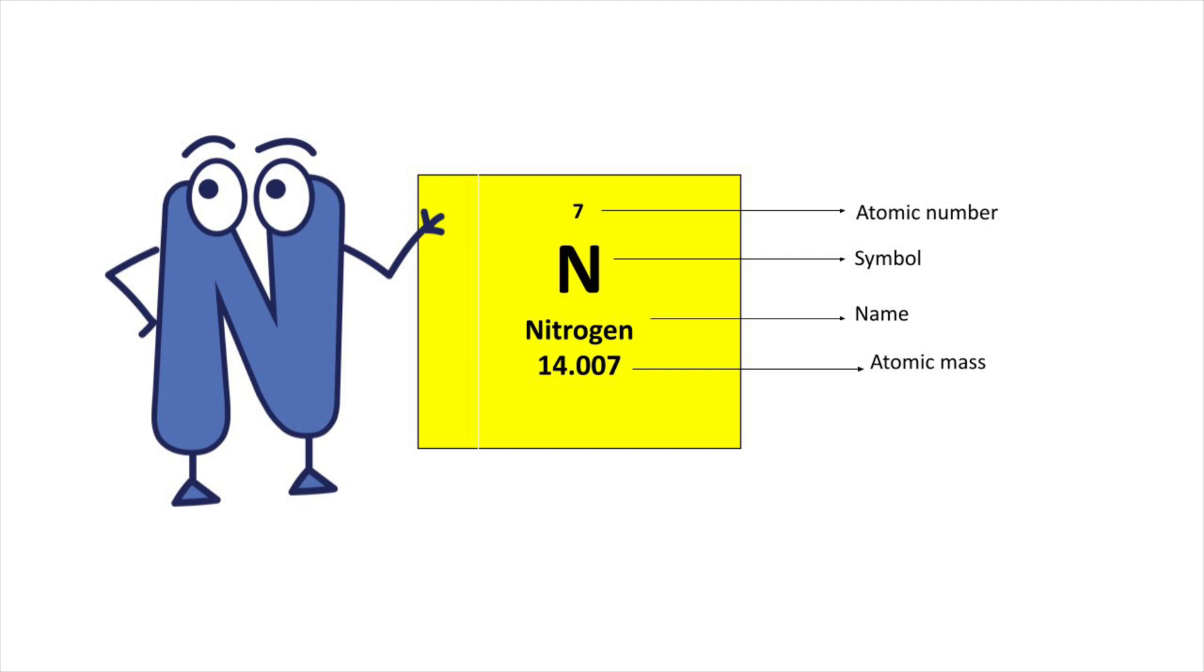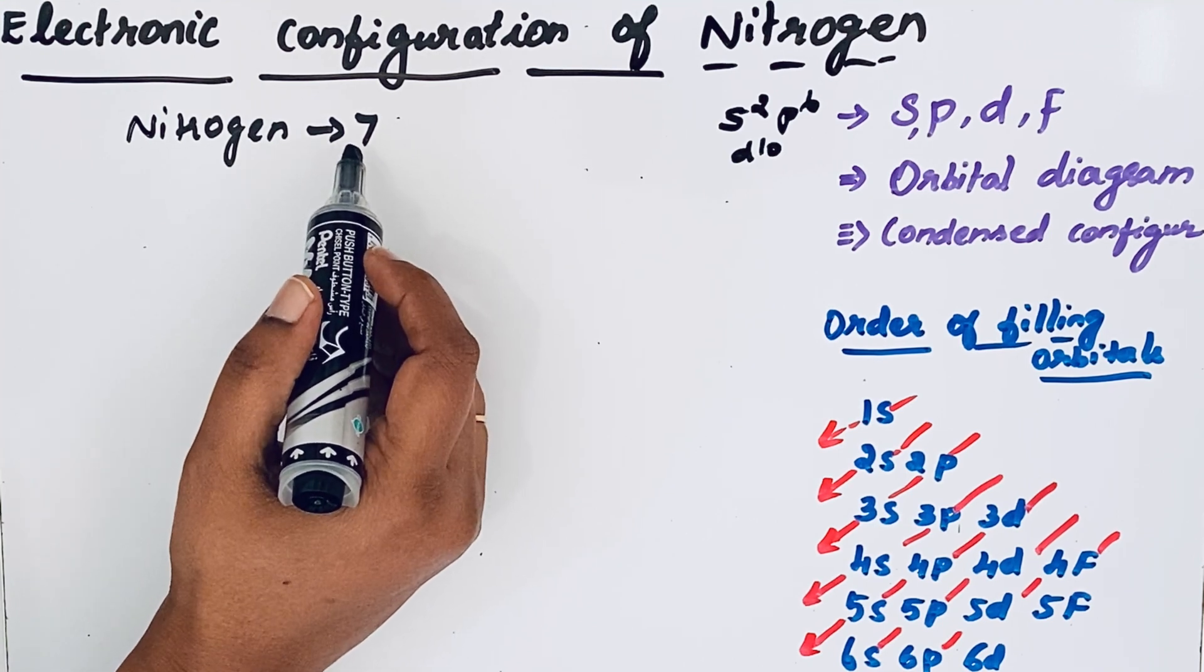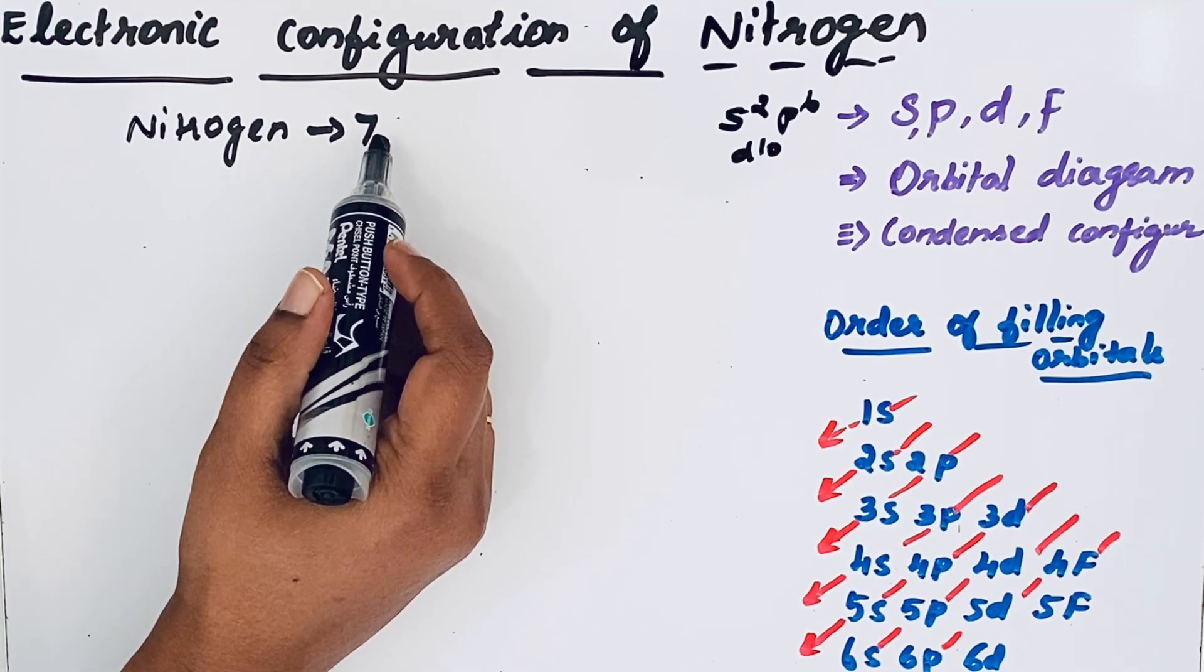Nitrogen atomic number is 7. Since nitrogen is a neutral atom, atomic number is equal to number of electrons.